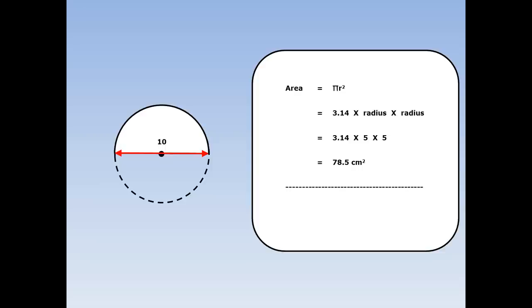That's not what we were asked for — that's the whole circle. So we need to divide that by 2 to find half a circle. Our final answer is 39.25 centimetres squared, because it's area.